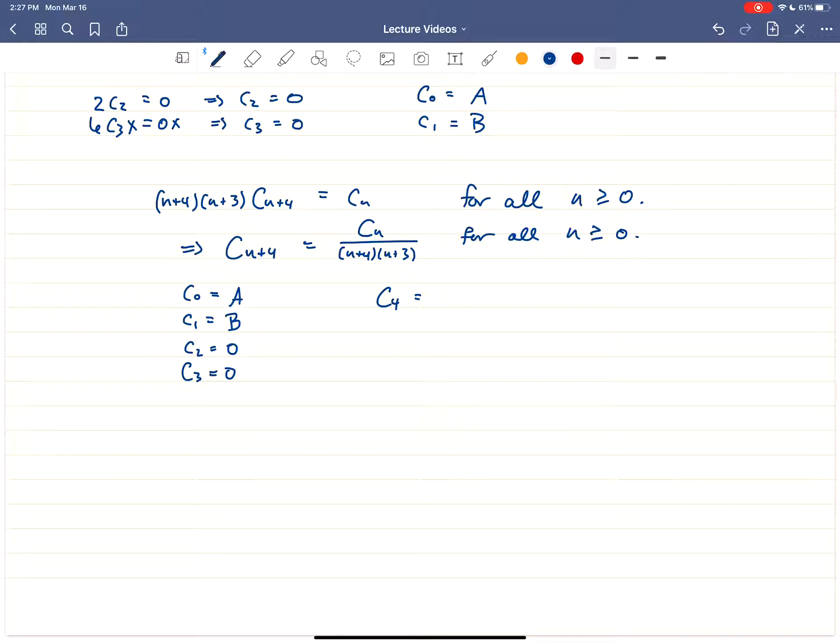c₀ is A. c₁ is B. c₂ is 0. c₃ is 0. And from there, we're going to use our recurrence to get the rest of the values. So c₄ is going to be c₀ over 4 times 3. And that's going to be A over 12. c₅ is going to be c₁ over 5 times 4. So that's c₁ is B, 5 times 4 is 20. c₆ and c₇. So c₆ is going to be c₂ over 6 times 5. c₇ is c₃ over 7 times 6. Those are both 0 because c₂ and c₃ are both 0.